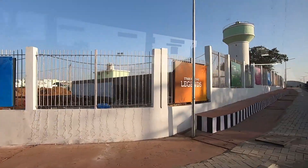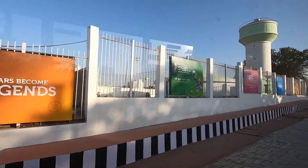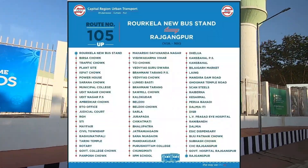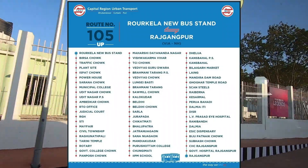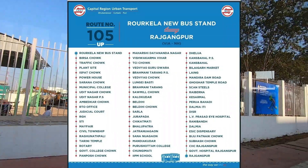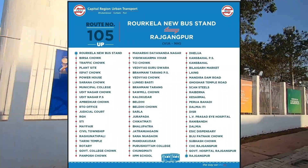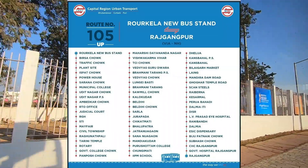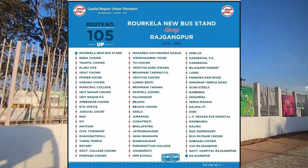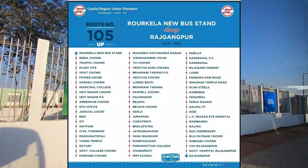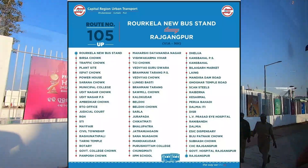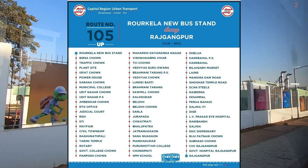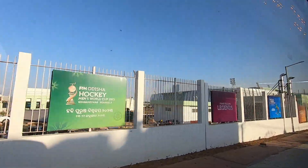Route number 105: Raurkela new bus stand to the airport and back. Via Sarnachok, Udit Nagar Chowk, STI, Civil Township, Panposh Chowk, National Highway, Hotelway, Government Hospital, and Rajganpur.